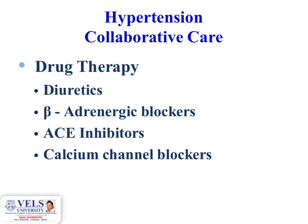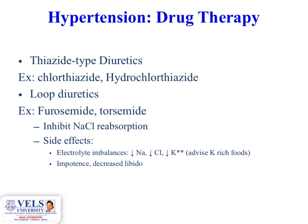Drug therapy for hypertension uses four classes of drugs. First, diuretics — including thiazide-type diuretics (e.g., chlorothiazide and hydrochlorothiazide) and loop diuretics (e.g., furosemide and torsemide). Their mechanism of action is to inhibit sodium chloride reabsorption. Side effects include electrolyte imbalances: decreased sodium, chloride, and potassium — patients should be advised to eat potassium-rich foods — as well as impotence and decreased libido.